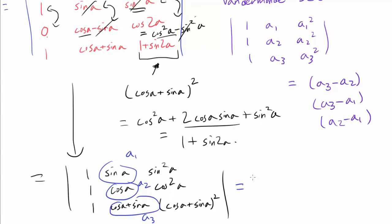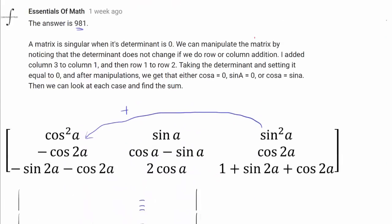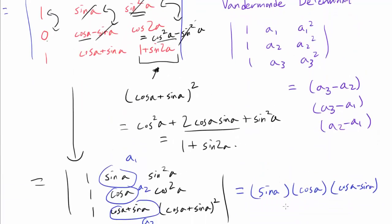So we know the determinant equals (a₃ − a₂)(a₃ − a₁)(a₂ − a₁), which is sin(a) times cos(a) times (cos(a) − sin(a)). Since we want the matrix to be singular, we want the determinant to be zero. So we are looking for values of a where sin(a) = 0, or cos(a) = 0, or cos(a) − sin(a) = 0 — that is, cos(a) = sin(a). These are the three cases we need to handle.